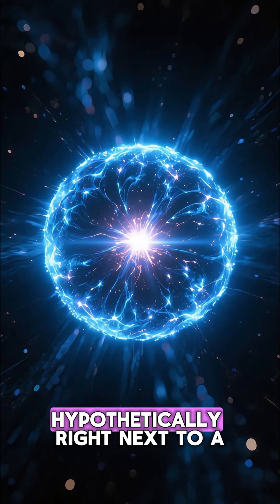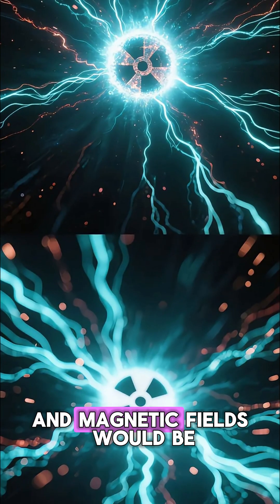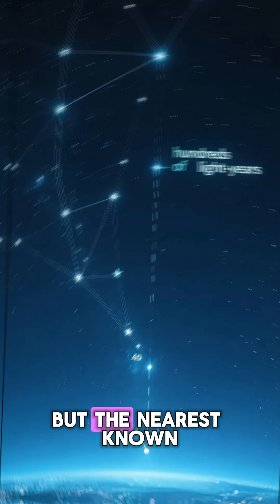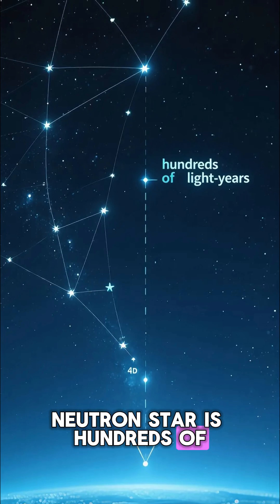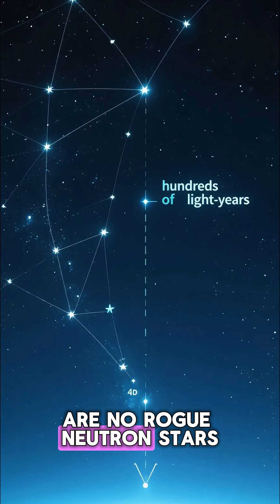Now, if you were hypothetically right next to a neutron star, it would be a very different story. The intense radiation and magnetic fields would be instantly lethal. But the nearest known neutron star is hundreds of light years away, and we've mapped the sky well enough to know there are no rogue neutron stars heading our way.